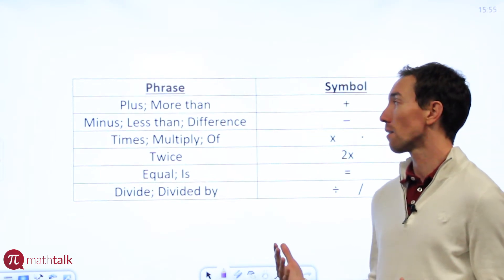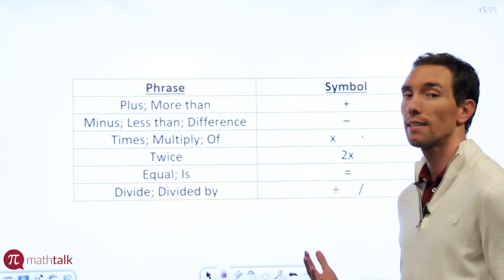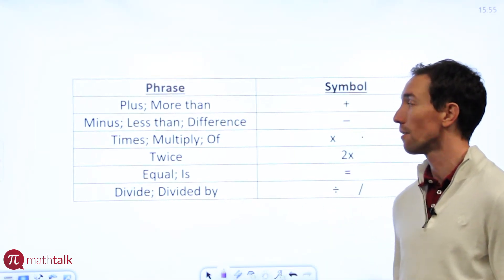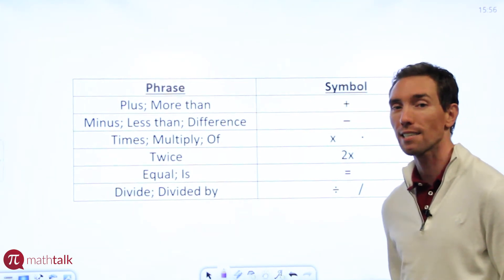If you see the word or phrase 'plus' or 'more than,' you're going to use a plus sign or addition symbol as shown here. If you see something such as 'minus,' 'less than,' or 'the difference between,' you're going to use a minus sign or subtraction sign.